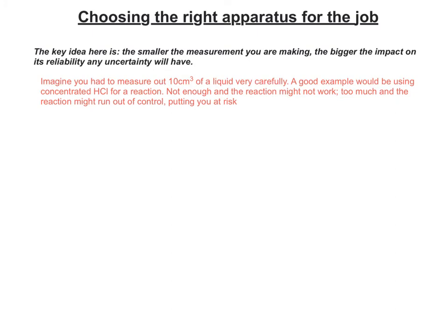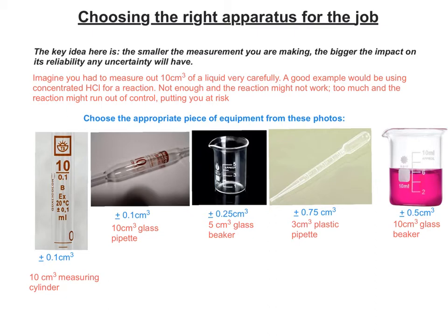Let's think about a real-life example. If you had to measure out 10 cm³ of a liquid such as concentrated HCl, you'd have to measure it extremely carefully because it's highly corrosive. If you don't use enough, the reaction might not work, but if you use too much, the reaction could go out of control and you're putting yourself at risk. So you need to know that what you're doing is reliable. We've got five pieces of equipment that could be candidates, and I've included general uncertainty ranges for them — you can see for the measuring cylinder it's plus or minus 0.1 cm³.